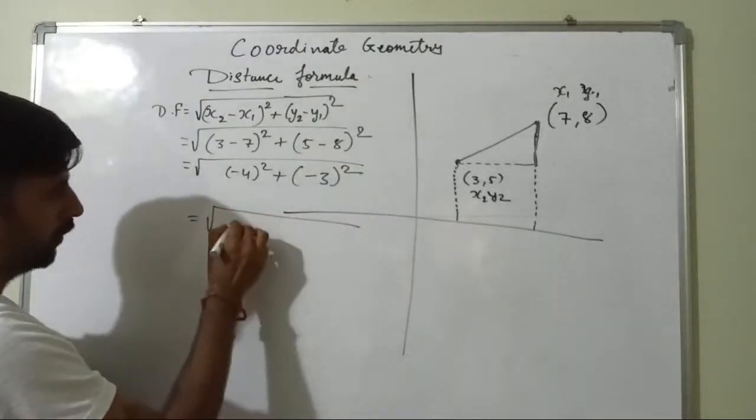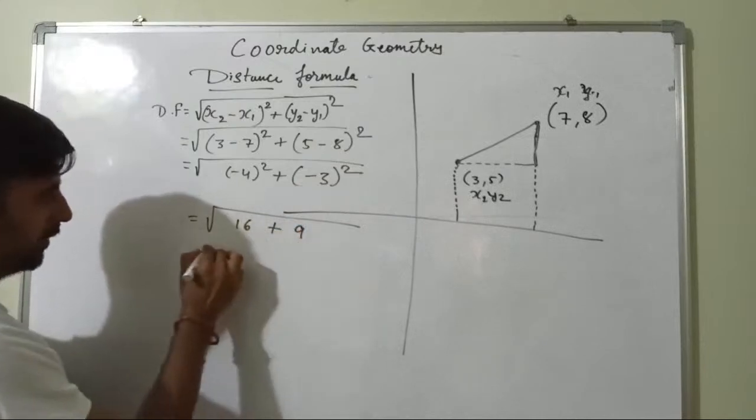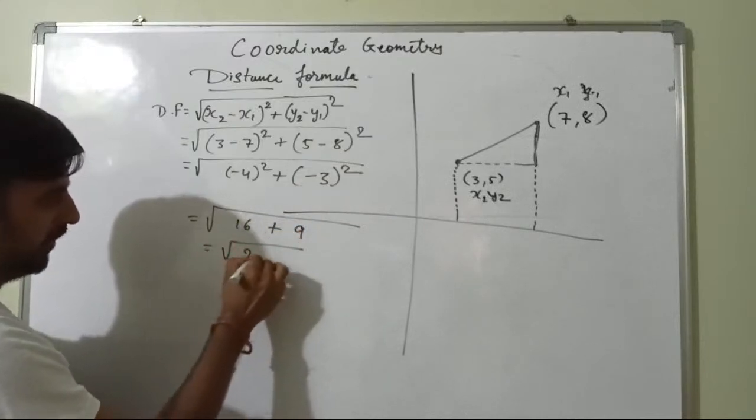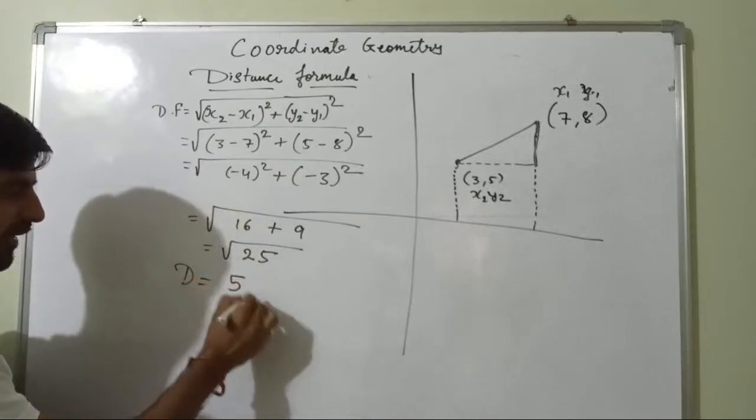So you will get under root 4 square 16 plus 3 square 9 under root 25. And so the distance will be under root 25, that is 5.